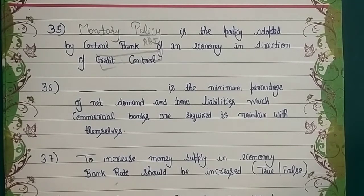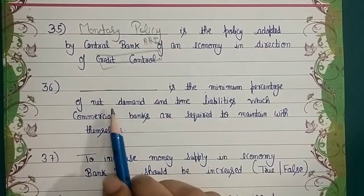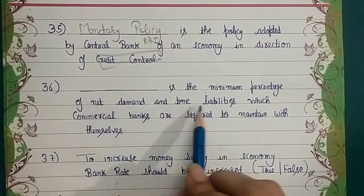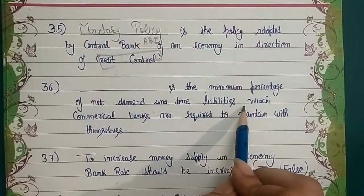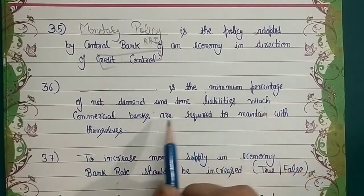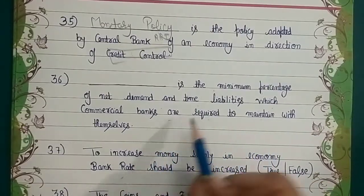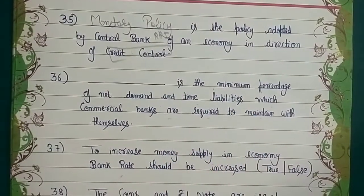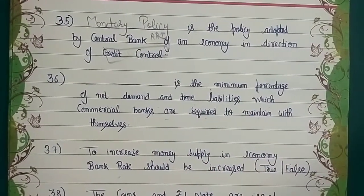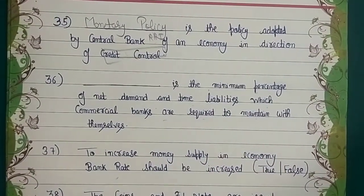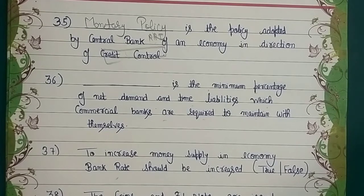The next concept is about the minimum percentage of net demand and time liabilities which commercial banks are required to maintain. This minimum percentage — the same deposit which we keep in commercial banks — what do we say? Let me explain with a simple example.